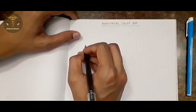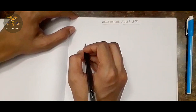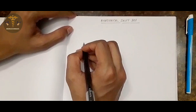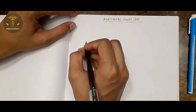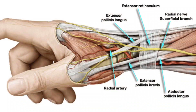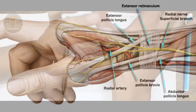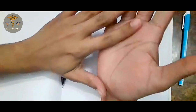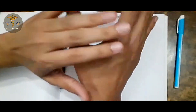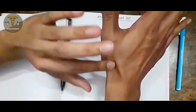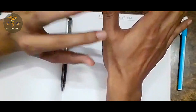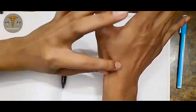Hello everyone, welcome to my YouTube channel Medicos Insight. Today I am going to teach you about a new topic, that is the anatomical snuff box. As you've seen, this is the palmar aspect and this is the dorsal aspect, and this area is known as the anatomical snuff box.